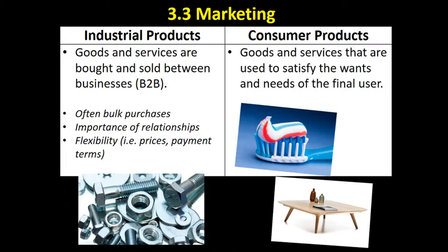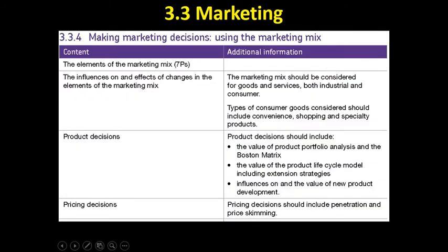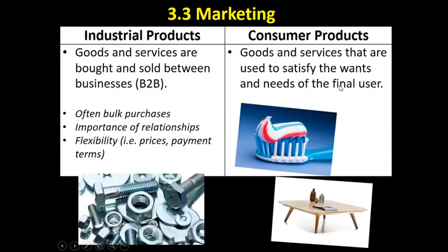You also need to be aware of the difference between industrial and consumer goods. Industrial products are goods and services that are bought and sold between businesses — it's also called B2B, or business-to-business transactions.